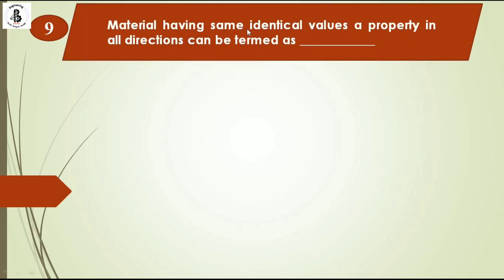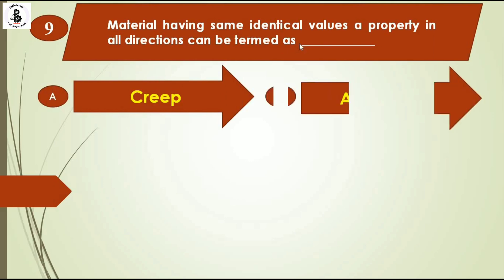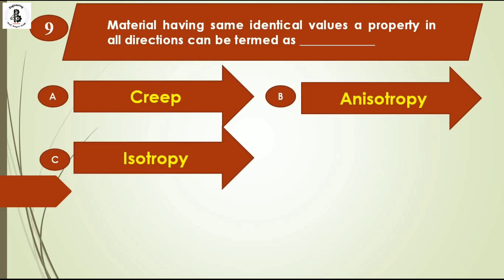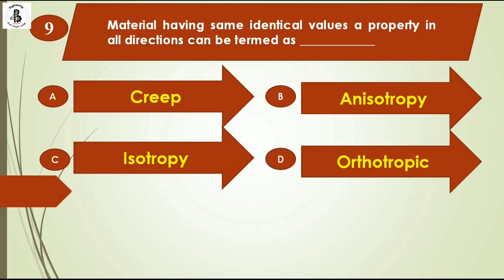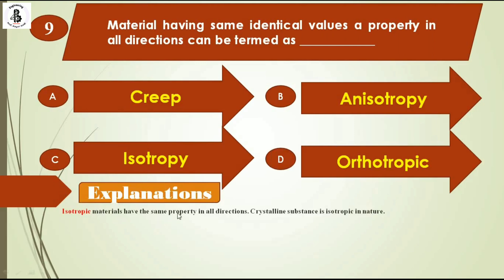Material having identical values or properties in all directions can be termed as: option A creep, option B anisotropy, option C isotropy, option D orthotropic. Isotropic materials have the same properties in all directions. A crystalline substance is isotropic in nature. So the right answer is option C, isotropy.